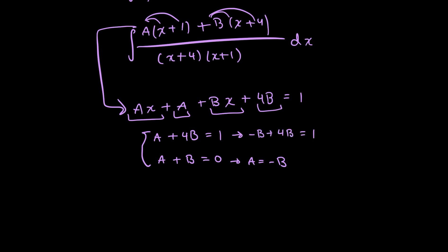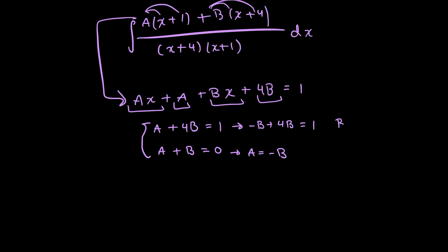So that leaves me with 3b equals 1. So b is equal to 1 third. And I know that a is the negative version of b. So a is just negative 1 over 3.